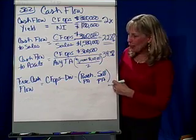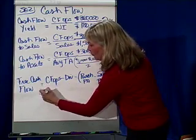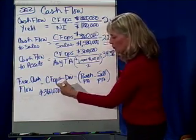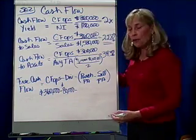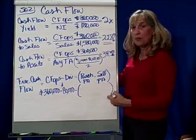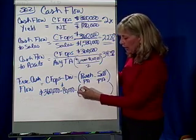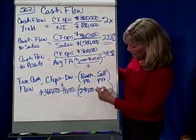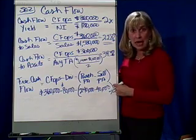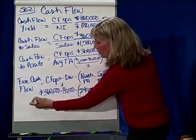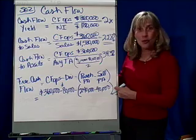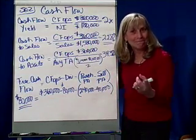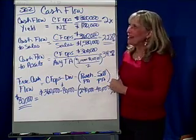The last one is free cash flow. Cash flow from operations is $360,000. The problem tells us we paid $80,000 in dividends, so we subtract that. Then we look at the net difference between plant assets purchased and sold: $240,000 in cash went out for purchases, and $40,000 flowed in from sales — a net difference of $200,000. So $360,000 minus $80,000 minus $200,000 gives free cash flow of $80,000. Is that good or bad? It depends on your expectations. Those are the ratios for cash flow.